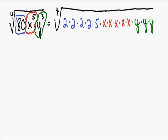Now we have completely factored the inside of our radical. And once again, since we have a fourth root, we want to find groups of four. Notice how we have a group of four twos here on the left.